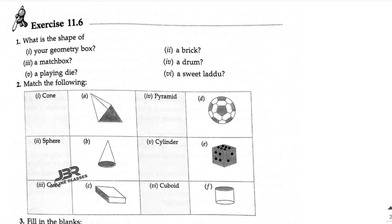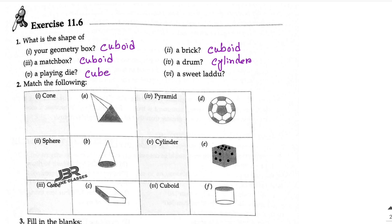The first problem: what is the shape of your geometry box? The answer is cuboid. Number two, a brick — it's also a cuboid. A matchbox — also a cuboid. A drum is like a cylinder, so write down cylinder. A playing die is a cube, and the last one, a sweet laddu, that is a sphere — not a circle, it's a sphere.